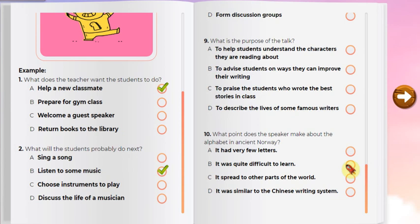Number ten. Listen to a teacher talking in a history class. Throughout history, people all around the world have invented many different writing systems. One interesting alphabet is the so-called Futhark, which was used in Norway a thousand years ago. Futhark is an exceptional system because it is the shortest known alphabet in the world — it only had 16 letters. While some writing systems like Chinese can have many thousands of symbols, Futhark made do with just 16 characters. What point does the speaker make about the Futhark alphabet in ancient Norway?